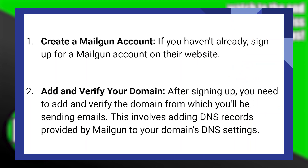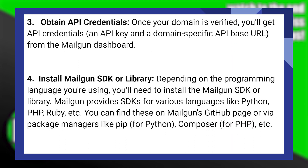After signing up, you need to add and verify the domain from which you will be sending emails. This involves adding DNS records provided by Mailgun to your domain's DNS settings. Once your domain is verified, you will get API credentials from the Mailgun dashboard.